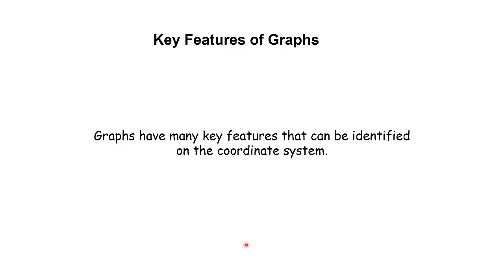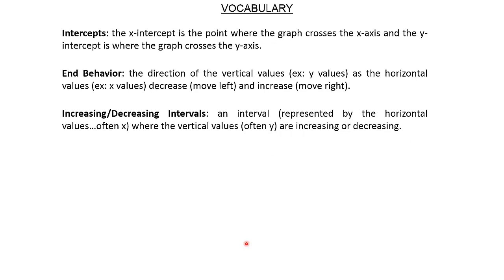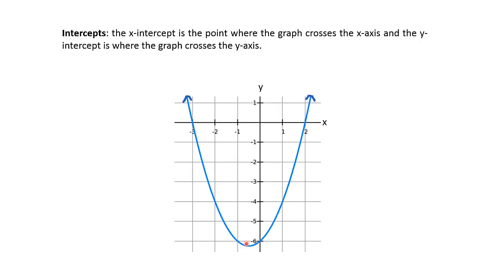In this video, we're going to cover some vocab words that go over key features of graphs. The list of vocab words will be intercepts, end behavior, and increasing and decreasing intervals. So let's go ahead and start off with the intercepts.